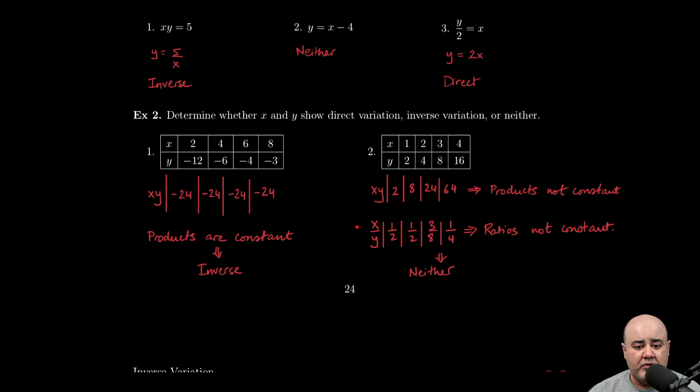And just to drive the point home, had we found y over x, we'd run into the same issue. 2 divided by 1 is 2. 4 divided by 2 is 2, which is fine. These two are the same, but 8 divided by 3 is not 2. And 16 divided by 4 is 4, which is certainly not 2.